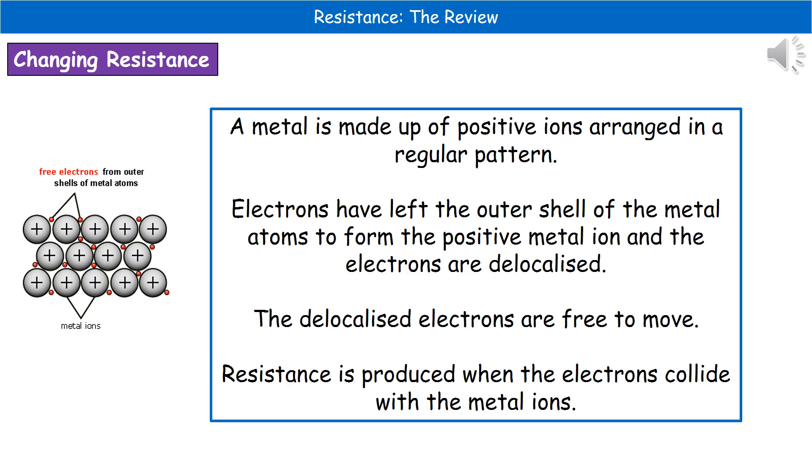What we actually have in that scenario are all of these delocalized electrons, which are then free to move through that structure. If those electrons collide with something like the metal ions, that's what resistance actually is. It's the collision of our delocalized electrons with the metal ions.